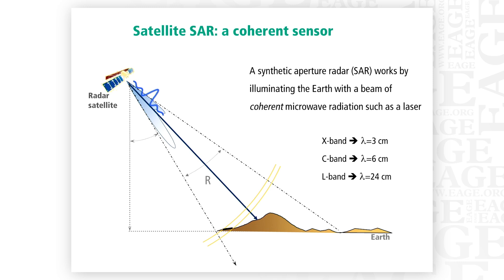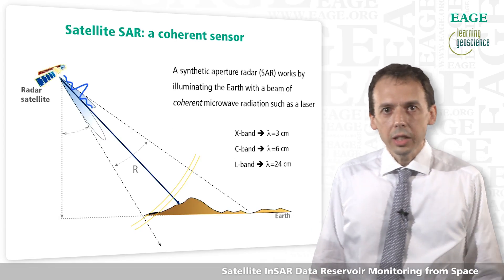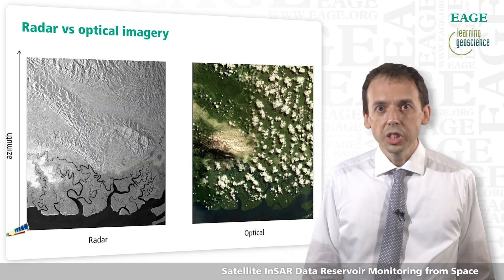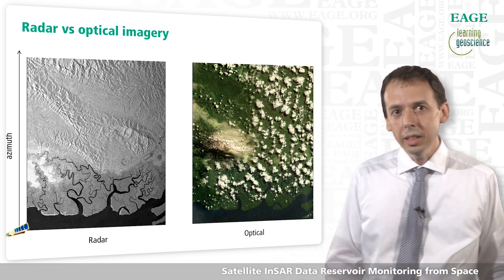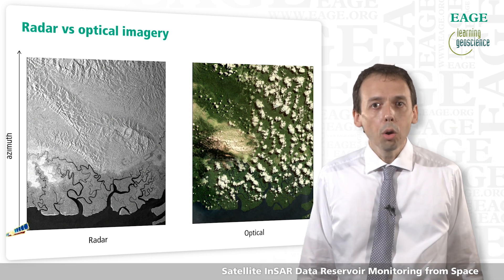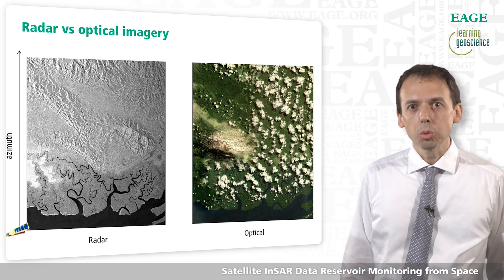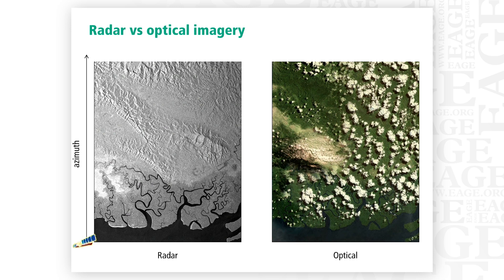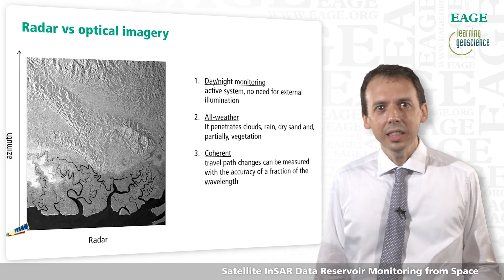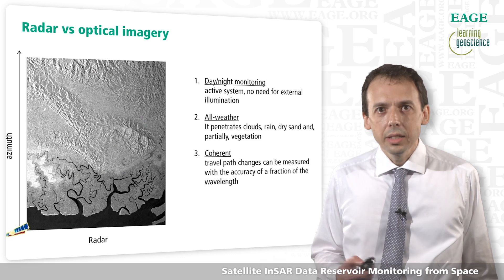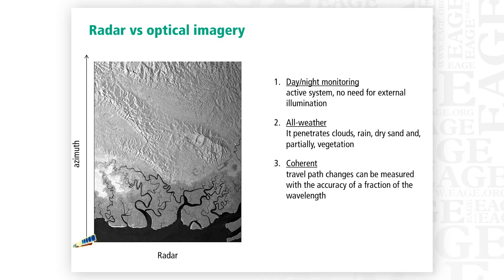A synthetic aperture radar works by illuminating the Earth with a beam of coherent microwave radiation, such as a laser. The most important frequency bands used by SAR data are X-band, C-band, and L-band. Typically the wavelength is just a few centimeters long. SAR data can be acquired independently of sun illumination — it is an all-weather sensor. It penetrates clouds, rain, dry sand, and partially vegetation. Here you have an example: this is an area in the Far East where it's almost impossible to find a good optical image due to cloud coverage, but the radar acquisition was acquired at night time.